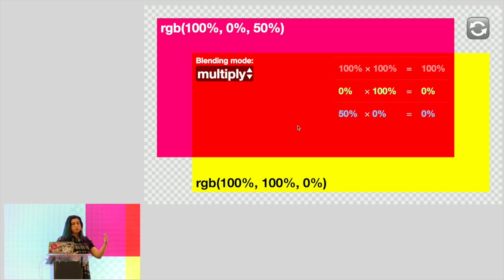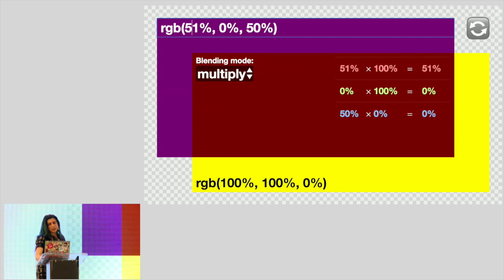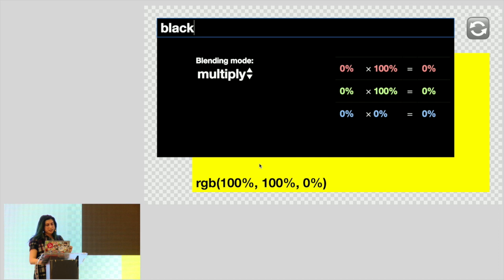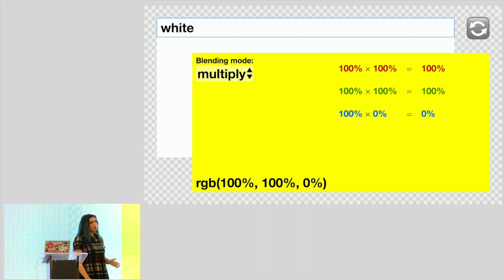You express both colors on a scale from 0% to 100% and multiply the percentages together. Notice that the color you get with Multiply is always at least as dark as the darkest of your colors. One useful property: when you have black, you always get black with Multiply, because you multiply every component with 0. And when you have white, you always get the other color, because multiplying anything with 100% gives you that thing back.